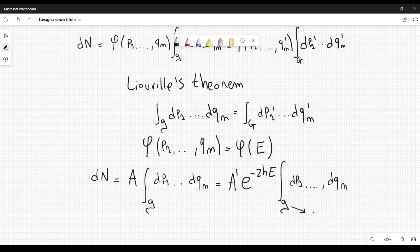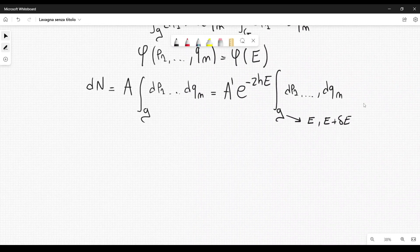And the region g is related to the energy. So we integrate over a very small region whose energy is bounded between the value E and the value E plus some small increment delta E. We are still in infinitesimal region. Then Einstein considered two systems.